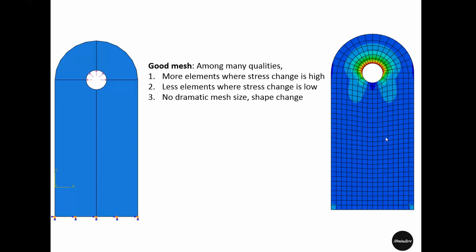The second characteristic of a good mesh is it will have fewer elements where stress change is low. For example, the stress is not changing significantly here, so this is the region of low stress change and we expect there should be fewer elements here. You want to reduce the number of elements in unnecessary regions because a higher number of total elements will mean longer time to run the simulation.